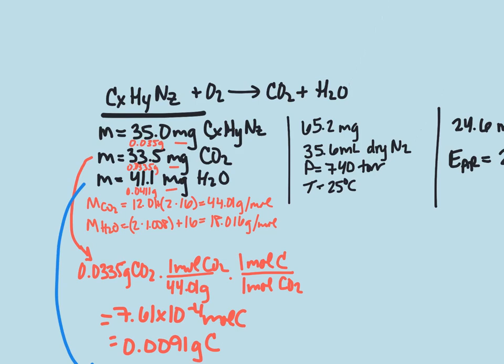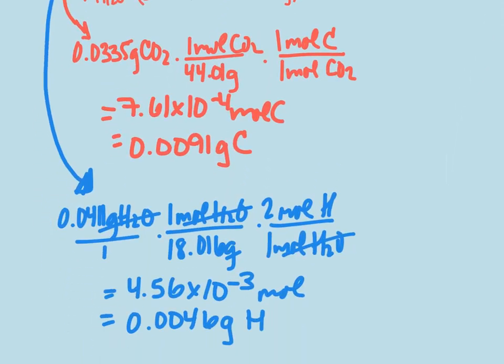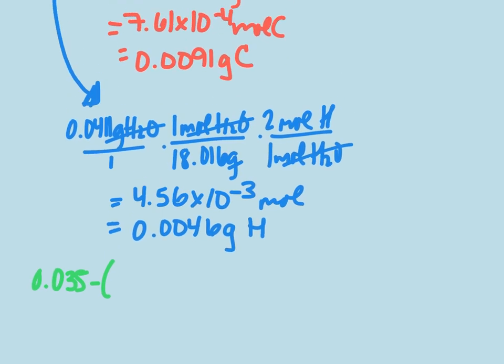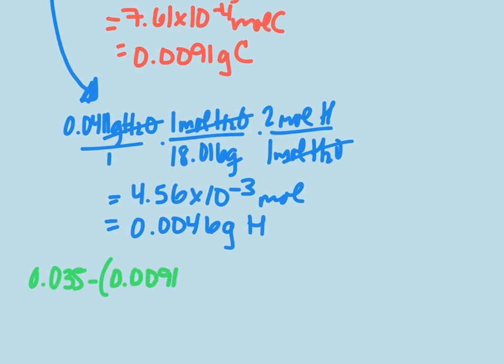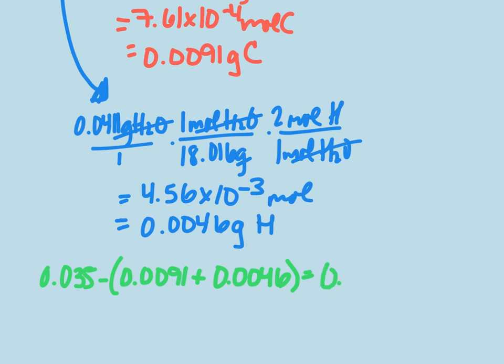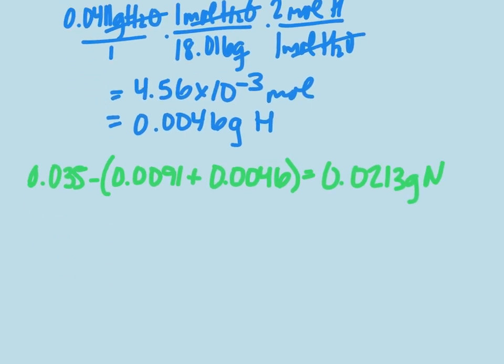So we have 0.0091 grams of carbon and 0.0046 grams of hydrogen. To find our nitrogen, we're going to come back up here. We know that we had 0.035 grams of this compound. And we're going to subtract the moles of carbon and the moles of hydrogen, so 0.0091 plus 0.0046. And we get that we have a total of 0.0213 grams of nitrogen. Now we have our grams, and we can also use that to figure out our moles. So when we divide that by the molar mass of nitrogen, which is 14, we get 0.00152 moles of nitrogen.